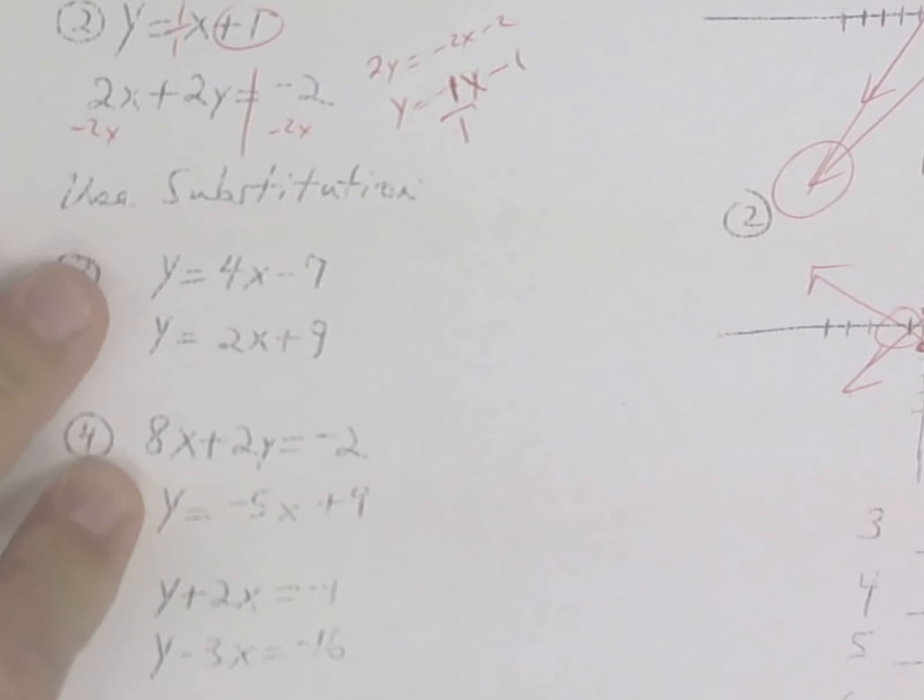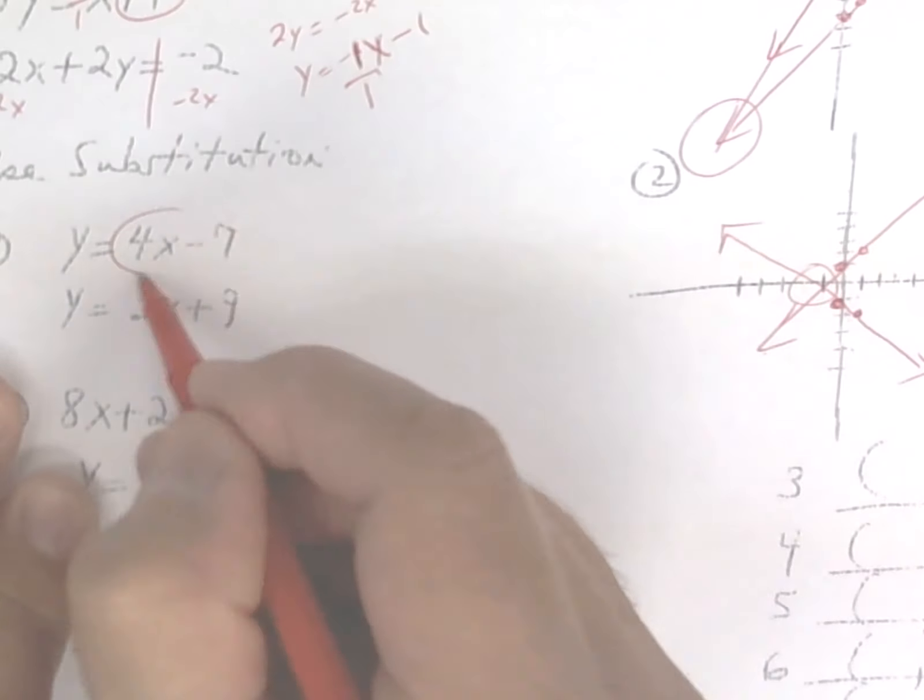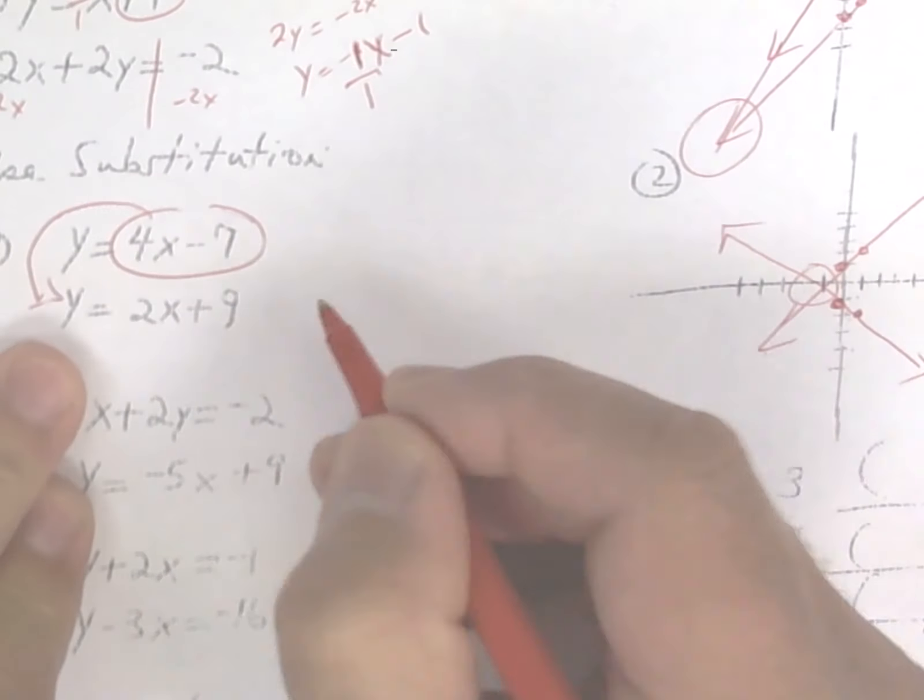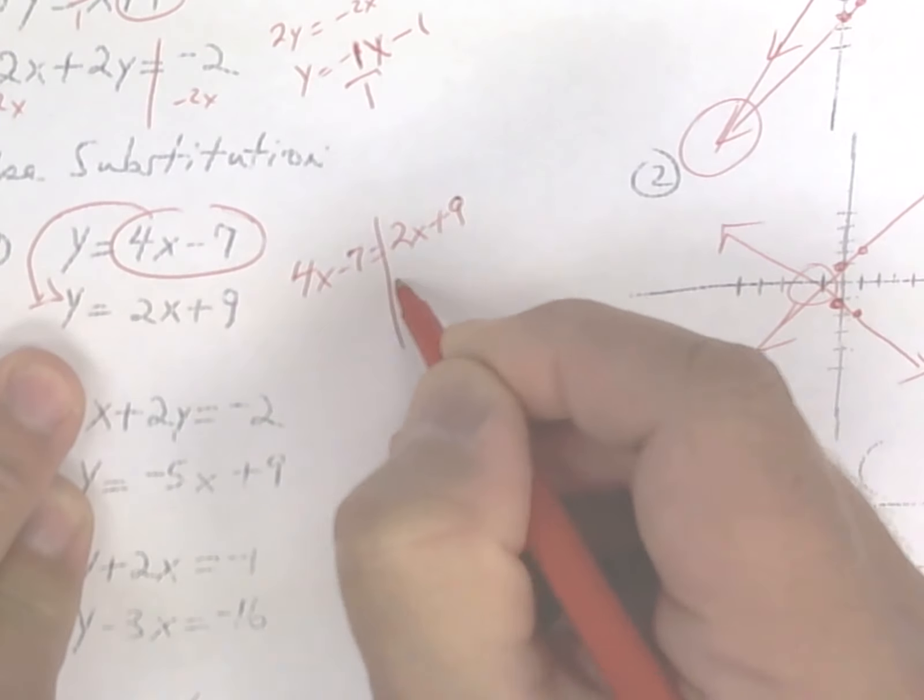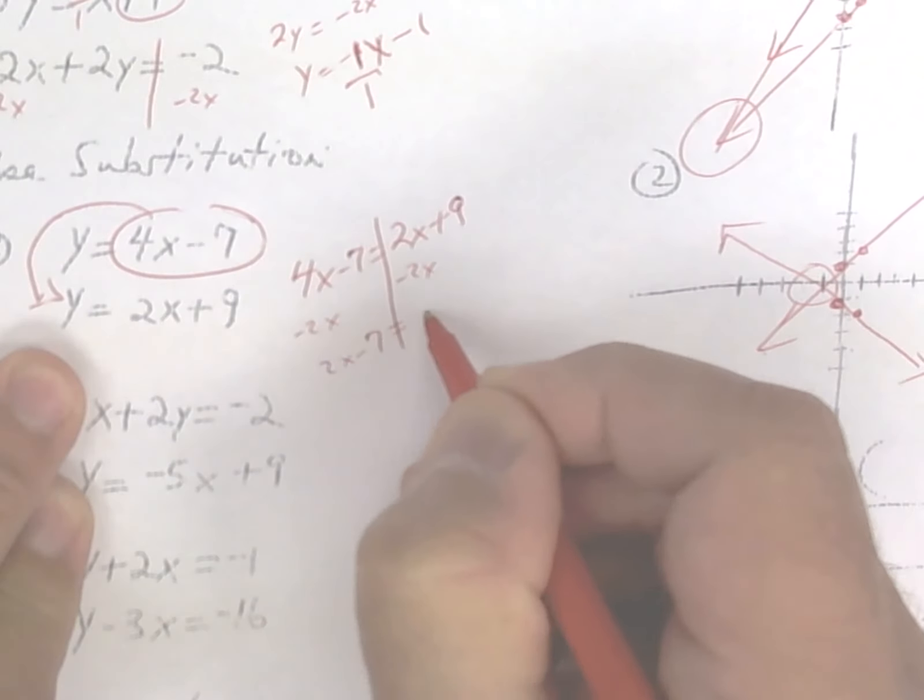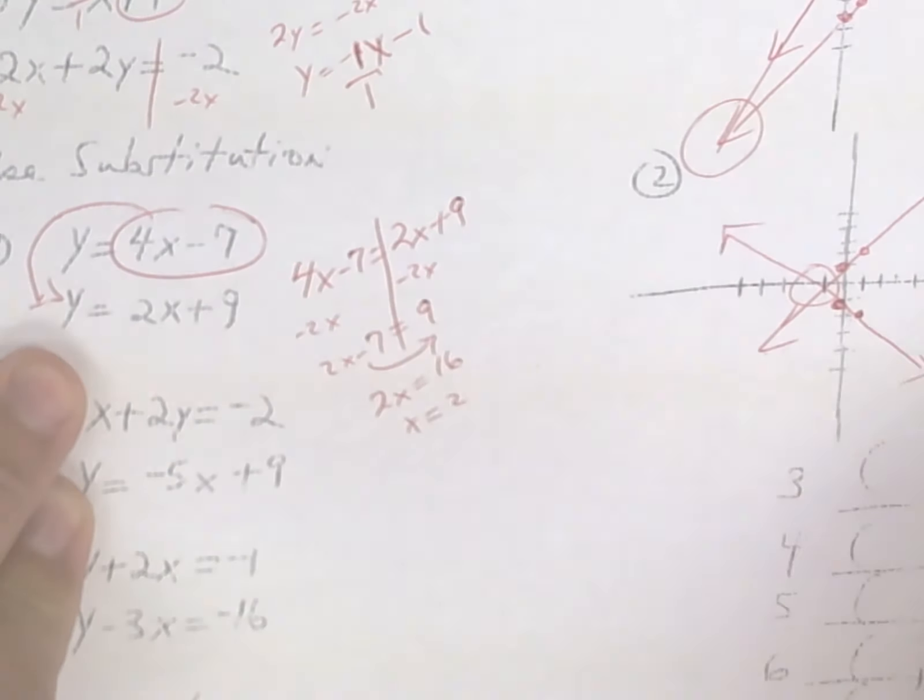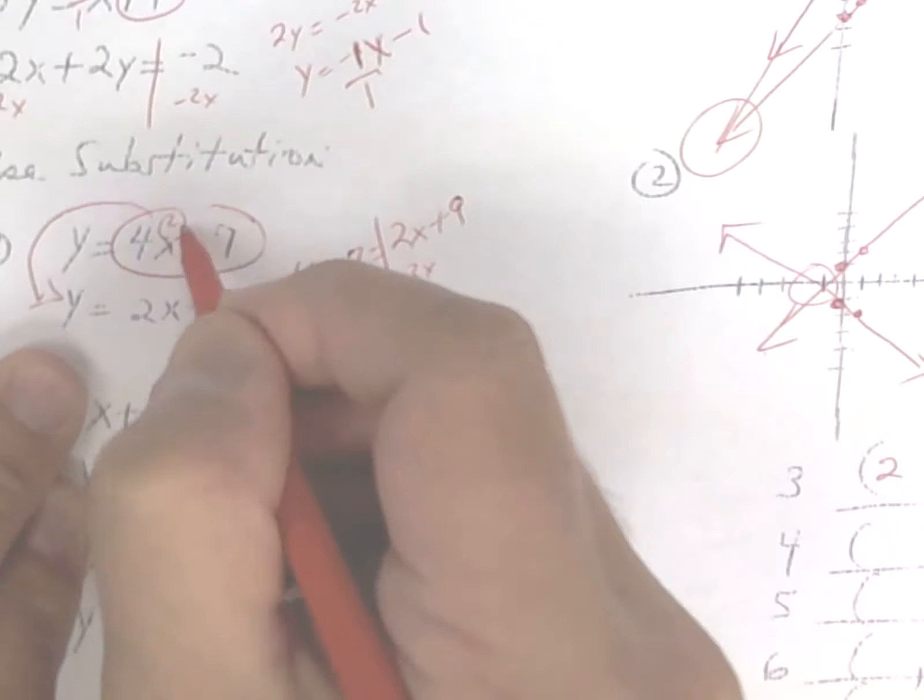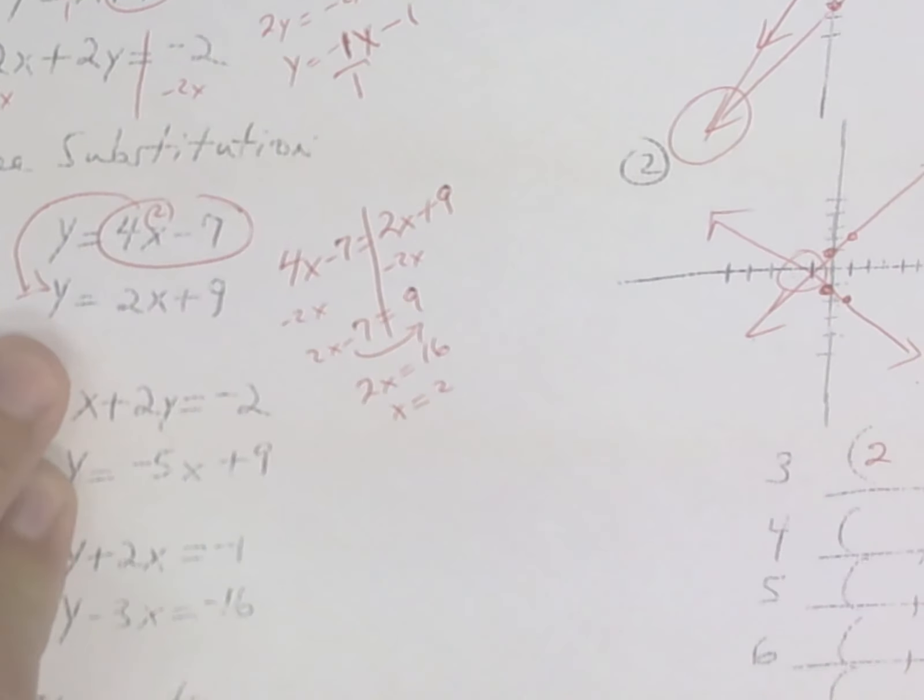The next one, substitution. To do substitution, what you're going to do is take all of this and put it in place of y. So subtract 2x. You're going to add and divide by 2, so you get x equals 2. 4 times 2 is 8, minus 7 is 1. So there's your answer.